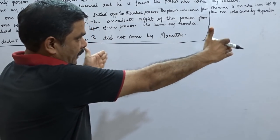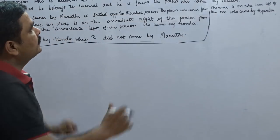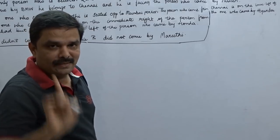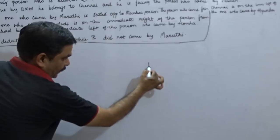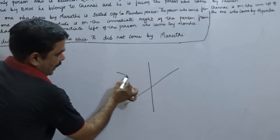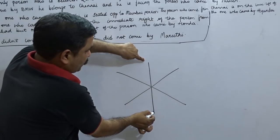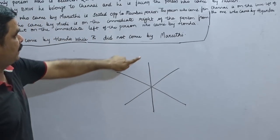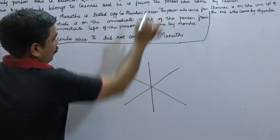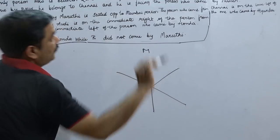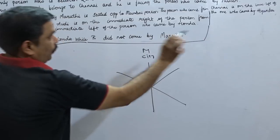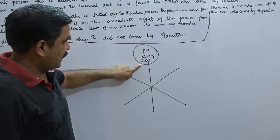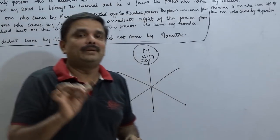Listen very carefully because this is one of the very important questions being asked in recent competitive exams. I will split it into two parts: puzzle on one side and arrangement on the other. Since six persons are given — an even number — I take positions with pairs of opposite seats. These two are opposite, these two are opposite, these two are opposite. We have three parameters: person, city, and car — six into three equals eighteen parameters to complete.